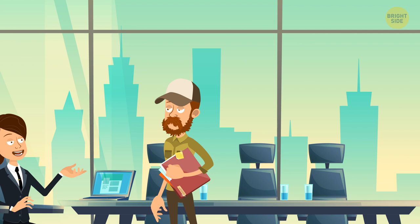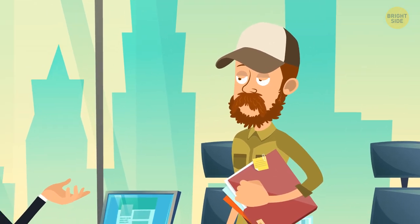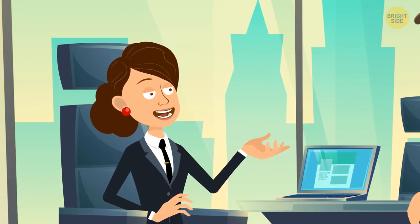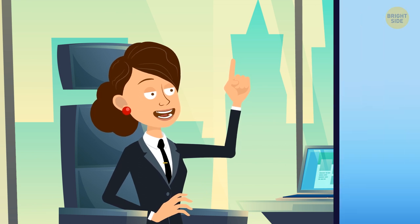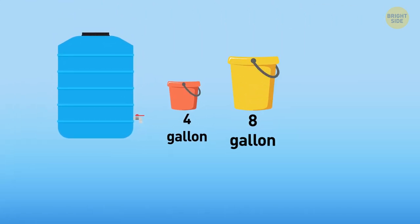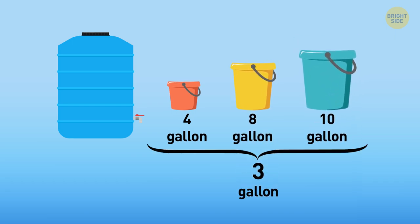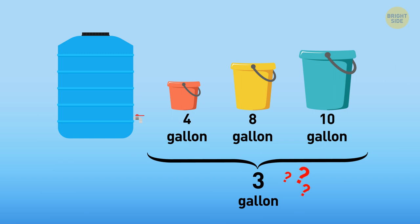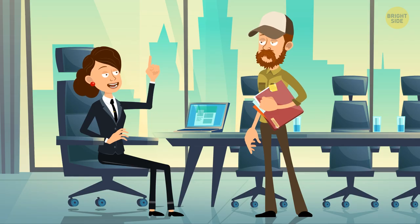Josh is at his first job interview. The interviewer, Nancy, decided to check his logical thinking and offered him this task. You have a large tank of water and three buckets with a capacity of 4, 8, and 10 gallons, respectively. You have to measure three gallons of water precisely using these buckets. How will you do it? Can you help Josh pass this test?